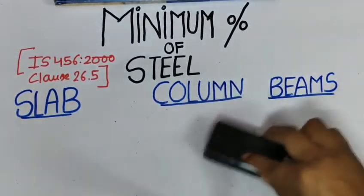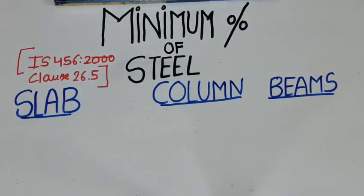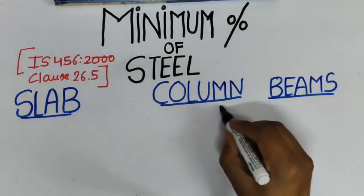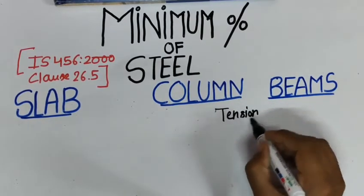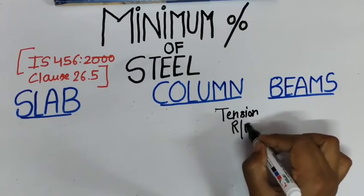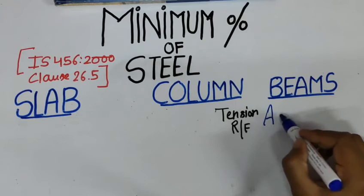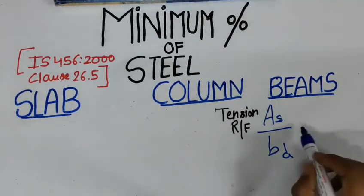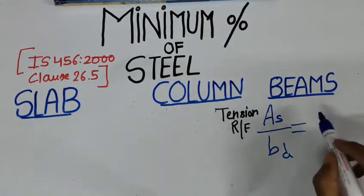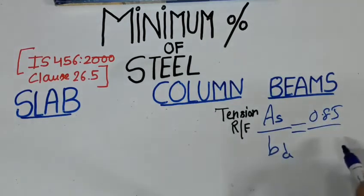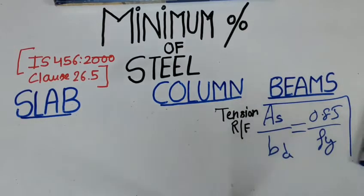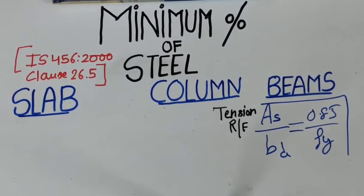Now we will move on to our beam structure. In beams, if we talk about the tension reinforcement, the minimum area of tension reinforcement shall not be less than this, followed by the equation. I will write it: AS by BD equal to 0.85 by FY.